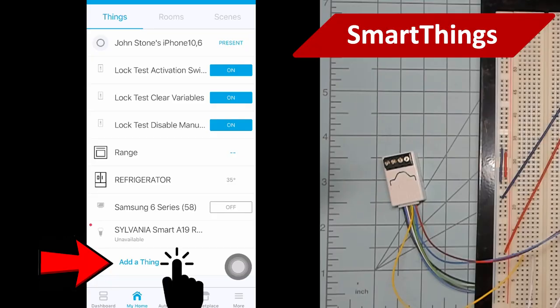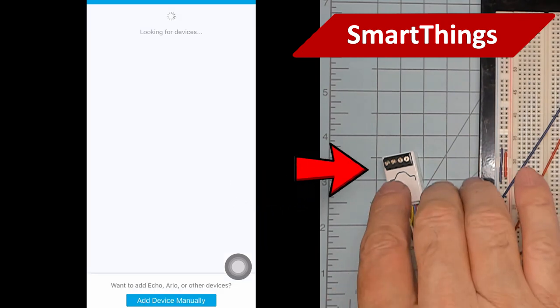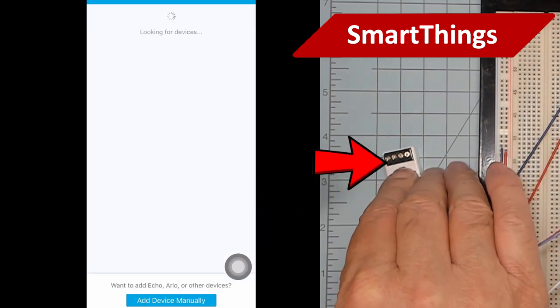On SmartThings, put the hub into pairing mode and then push this button three times. You may need to press this fairly hard.